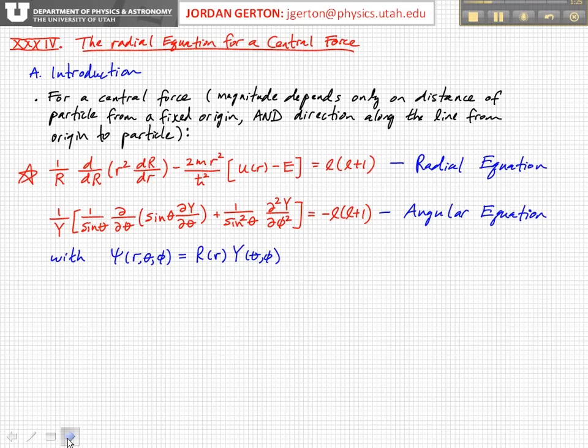For a central force, we can break the Schrodinger equation into a radial part and an angular part. We've already solved the angular part, and here's the radial part.